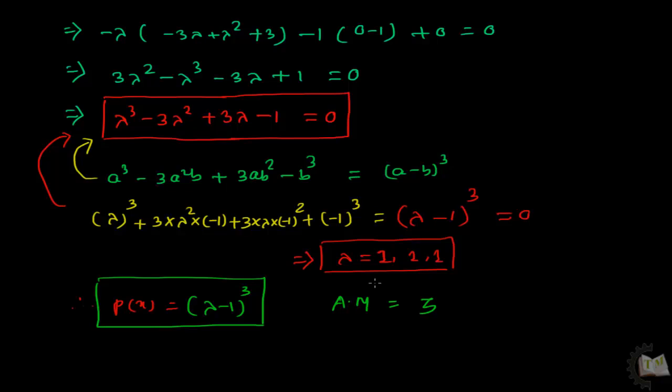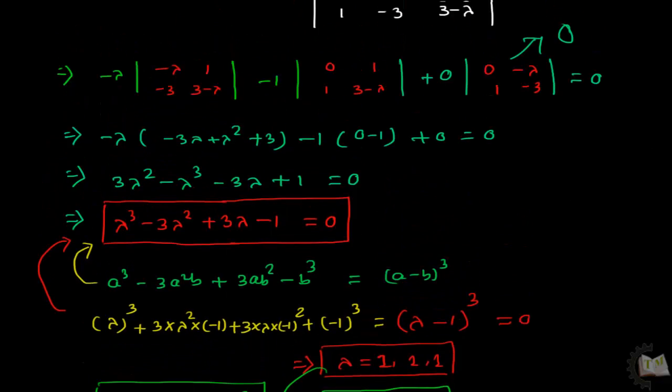How to get the algebraic multiplicity from this eigenvalue? The algebraic multiplicity AM will be 3, because lambda has 3 values which are repeating - same value. Another case: if lambda has 3 different values, then algebraic multiplicity will be 1 for each eigenvalue.